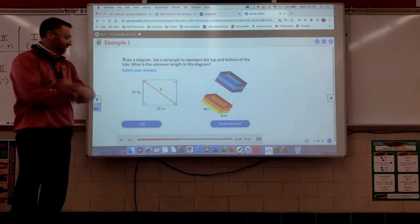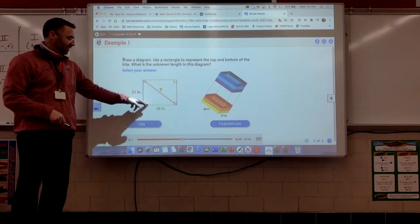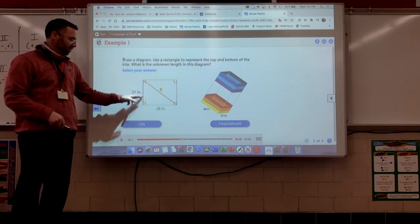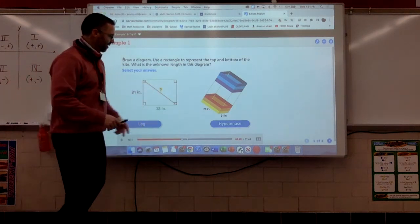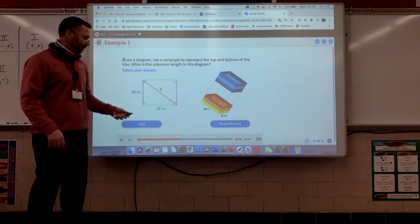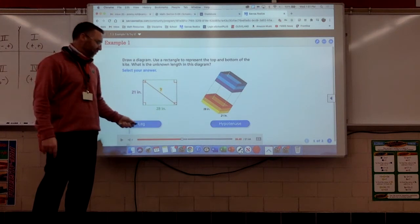What are we trying to find? Well, these two sides connected to the right angle, those are always called your leg, which means this missing side here, that diagonal, that's what we call the hypotenuse. Remember, it's the longest side of a right triangle.